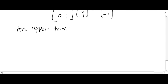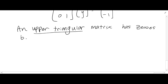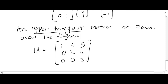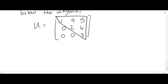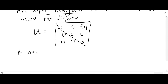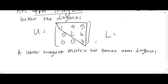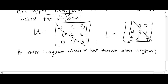An upper triangular matrix has entries that are zero below the diagonal — it has this upper triangular form. A lower triangular matrix has zeros above the diagonal, for example this matrix has a lower triangular form with the nonzeros in the bottom left.